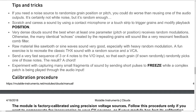Very dense clouds sound best when at least one parameter — pitch or position — receives random modulation. Otherwise, the many identical echoes created by the repeating grains will sound like a very resonant feedback comb filter. Raw material like sawtooth or sine waves sounds very good, especially with heavy random modulation. A fun exercise is to recreate the classic THX sound with a random source and a VCA. Send a very fast sequence of three or four notes to the V/oct input so that each grain, if sown randomly, randomly picks one of those notes — the result? A chord.